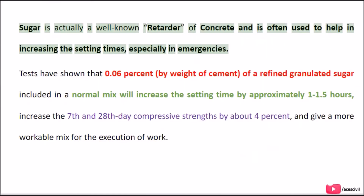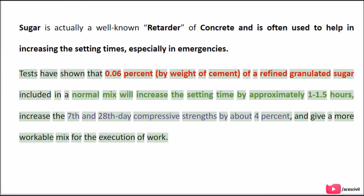Sugar is actually a well-known retarder of concrete and is often used to help in increasing the setting times, especially in emergencies. Tests have shown that 0.06% by weight of cement of granulated sugar included in a normal mix will increase the setting time by approximately 1 to 1.5 hours, increase the 7th and 28th day compressive strengths by about 4%, and give a more workable mix for the execution of work.